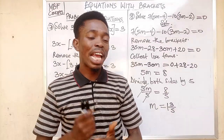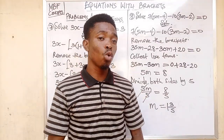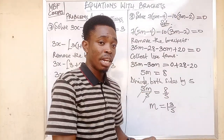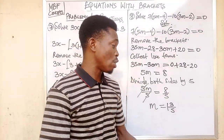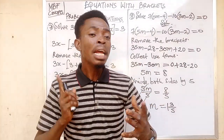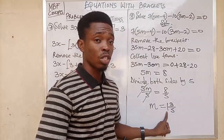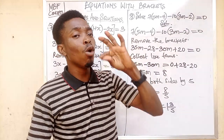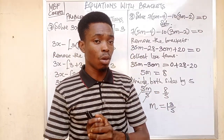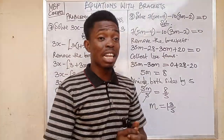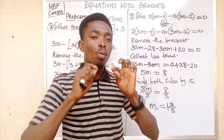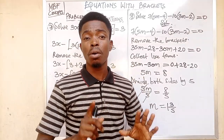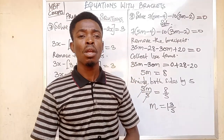To get your mixed fraction: find how many times the denominator enters the numerator — that gives you 1. Multiply that 1 by the denominator to get 5, then remove 5 from the numerator 8 to get the new numerator 3, while the denominator remains 5. So m equals 1 and 3 fifths.